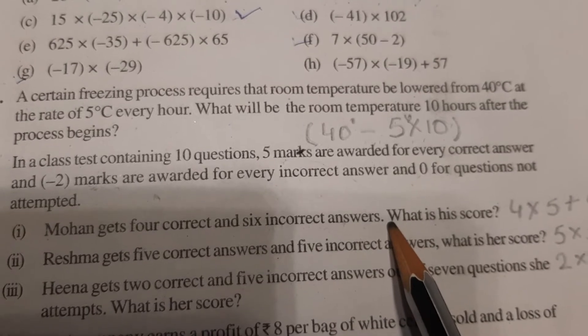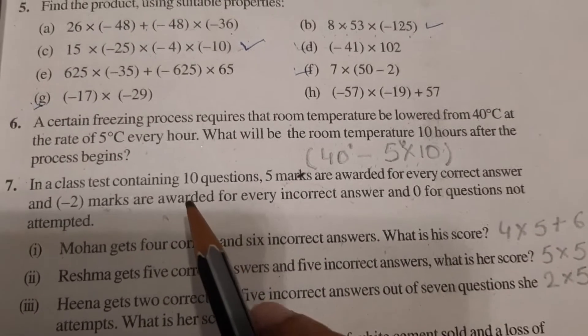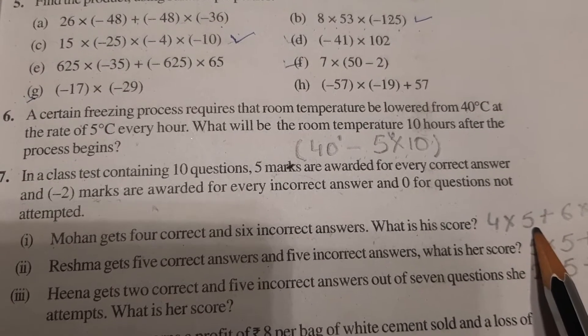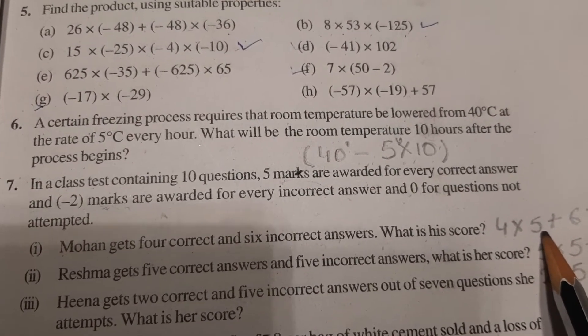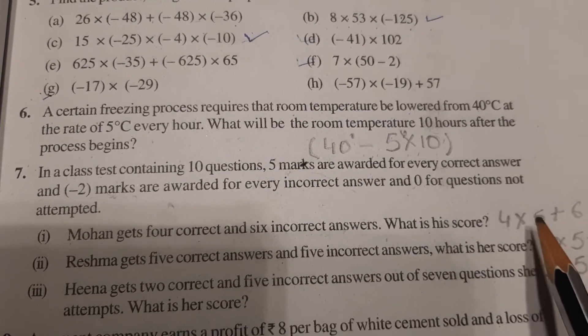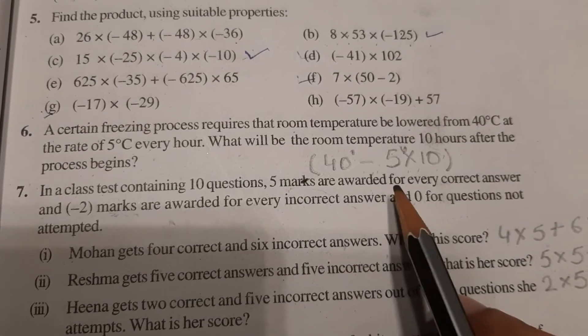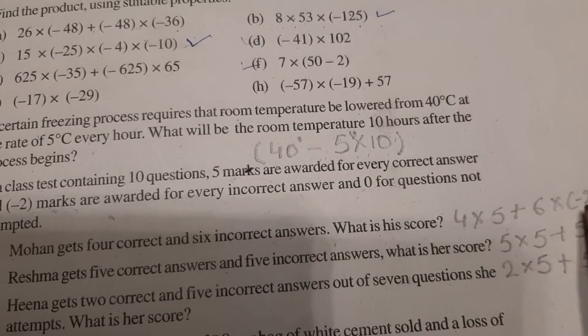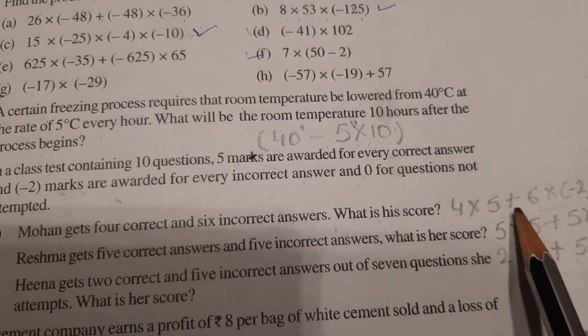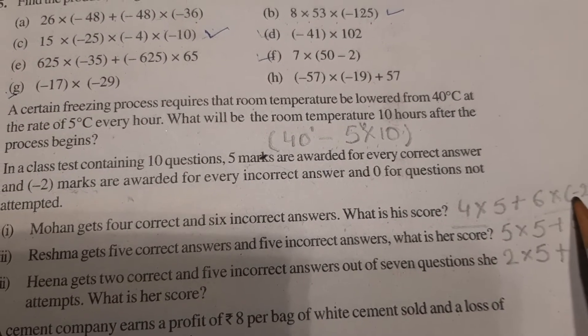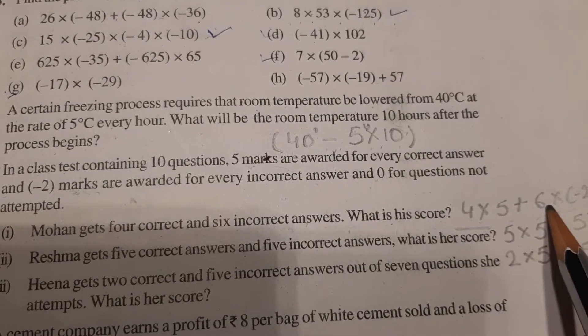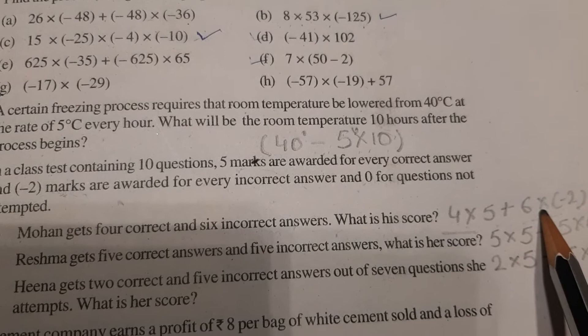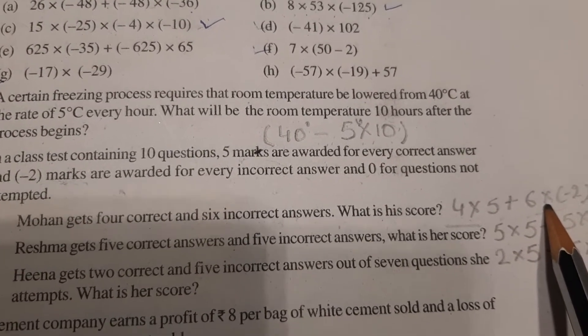Now according to this statement, first we will frame the equation. 4 correct, it means for correct answers how many marks? 5. So 4 into 5 for correct answers. Now score will be total by adding correct and incorrect marks. So plus, now 6 are incorrect but how many marks for incorrect? Minus 2. So 6 into minus 2. So again there are 2 operations: multiplication and addition. So first you will multiply both these separately and then you will add or subtract. Clear to all? So the main point is the main focus should be on framing equations, rest you all know how to solve it.